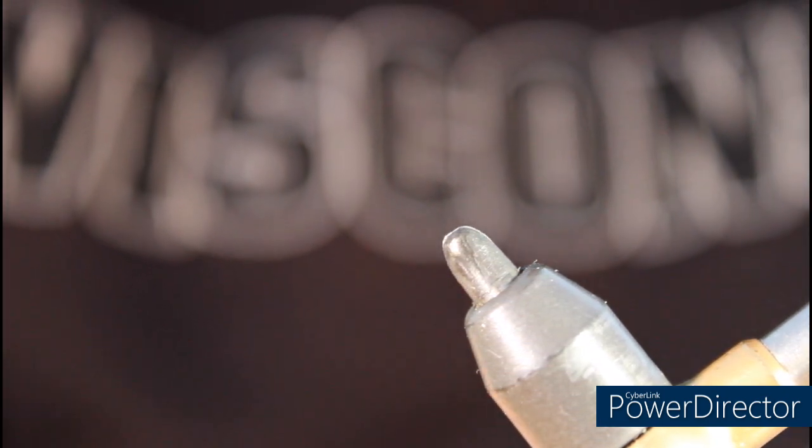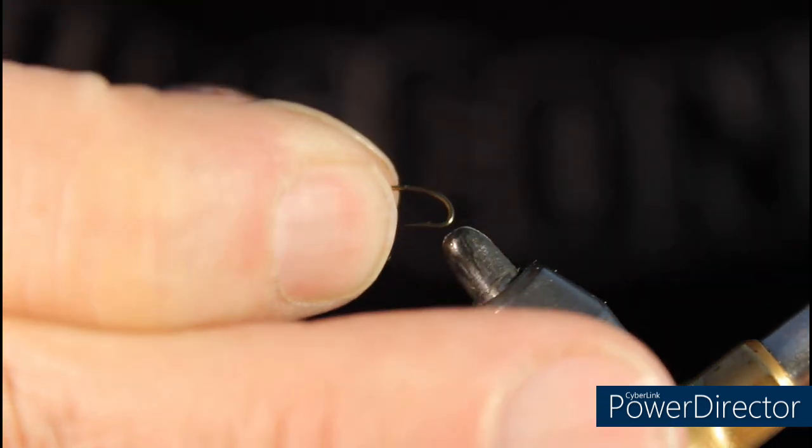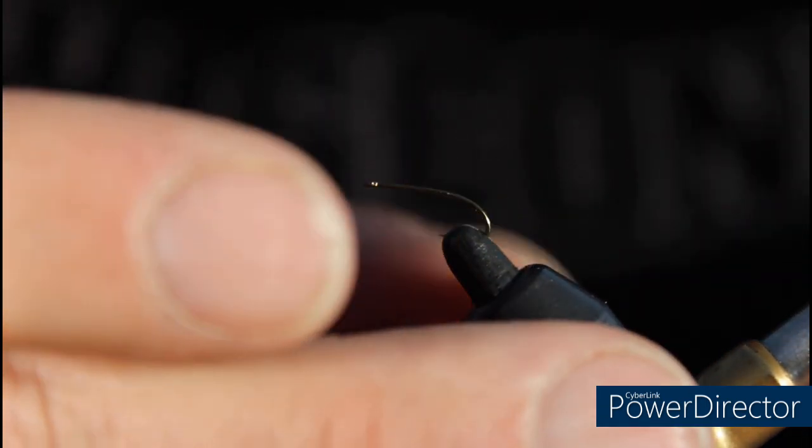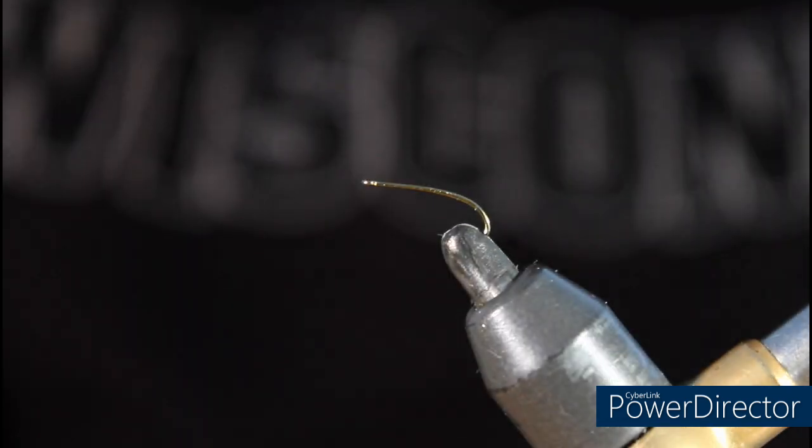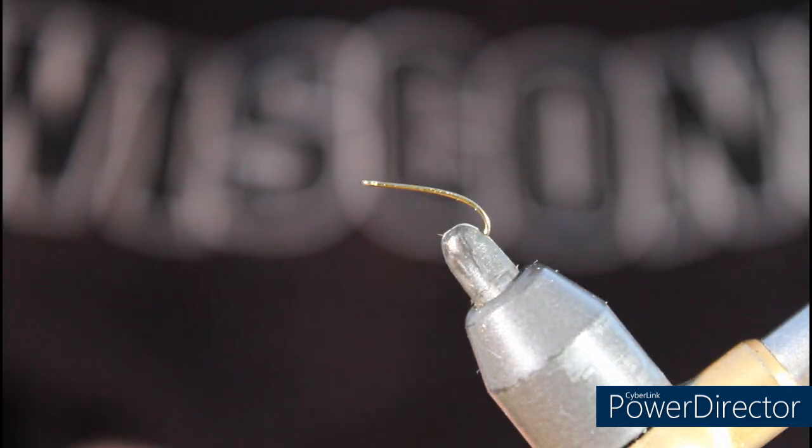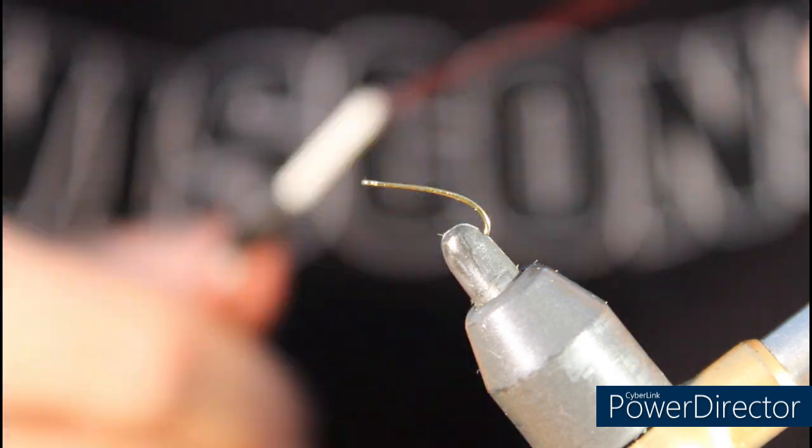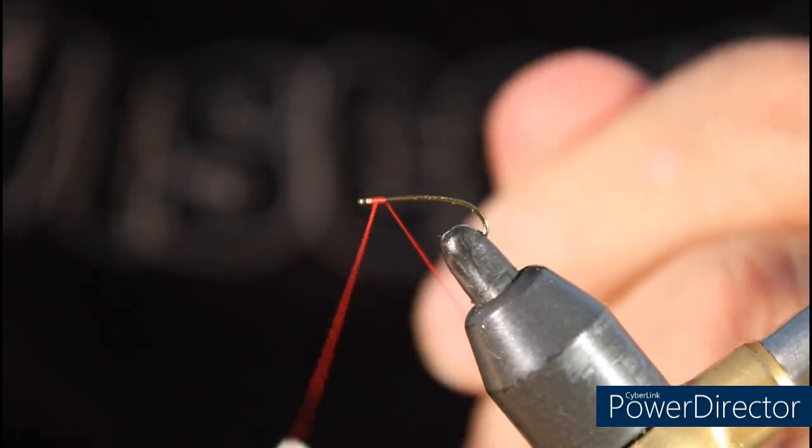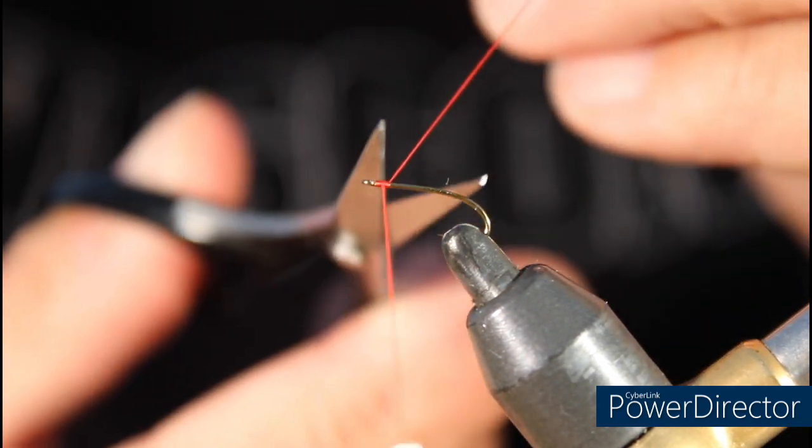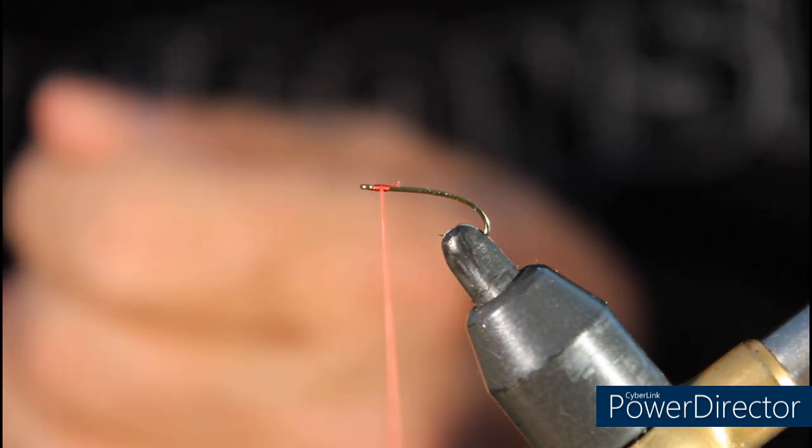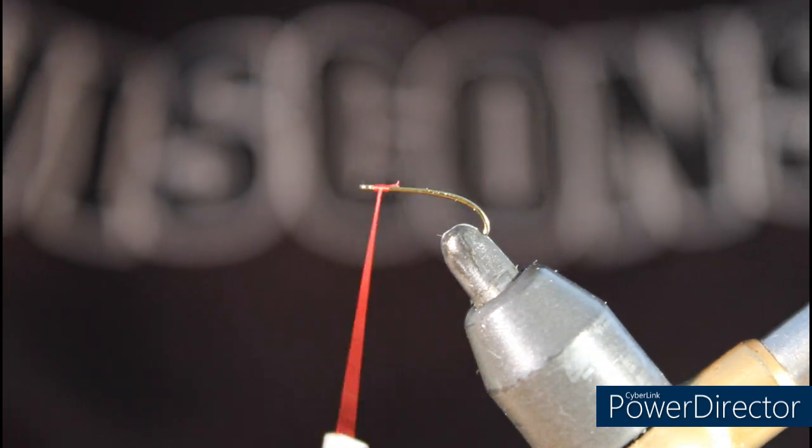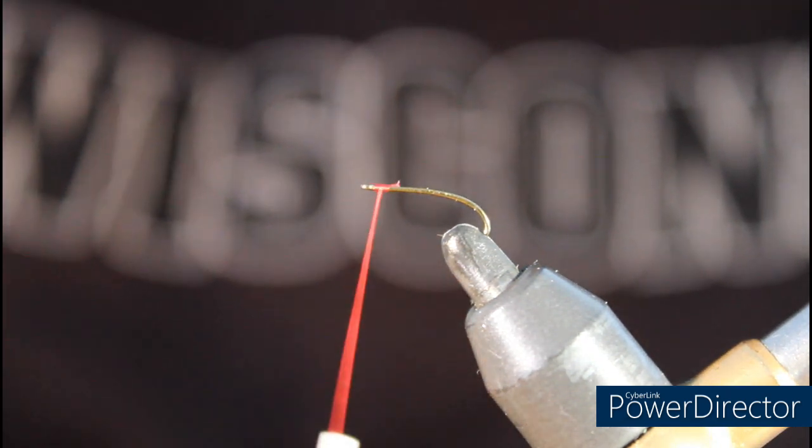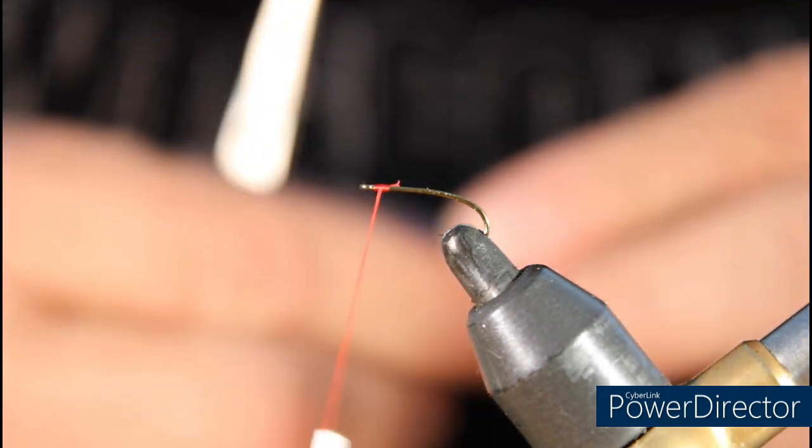We're going to use a TMC 200R and we'll put that into the vise and start with some red thread. Then we're going to get some red wire. We're using UTC small in red.